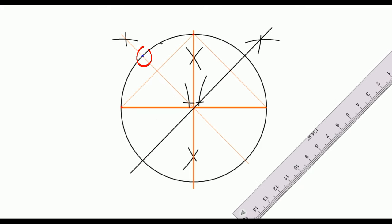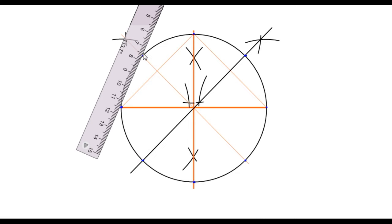Now you can observe we have a total of eight points on the circumference of the circle. I am highlighting those eight points on the boundary. Let's connect each of them in pairs to get our octagon.